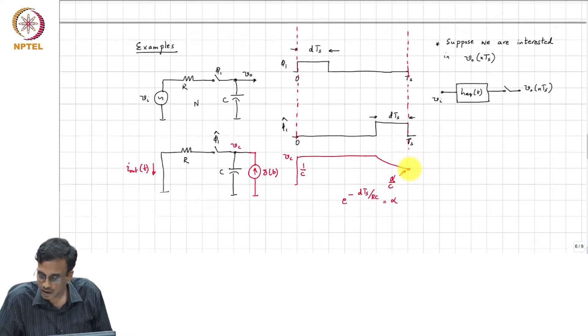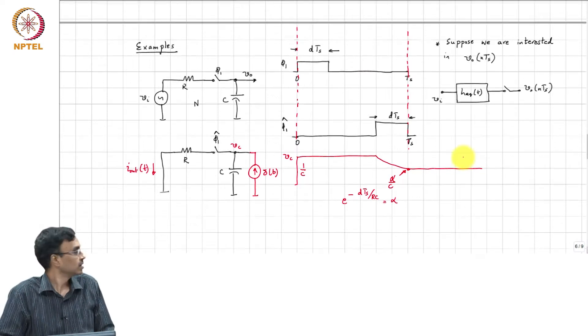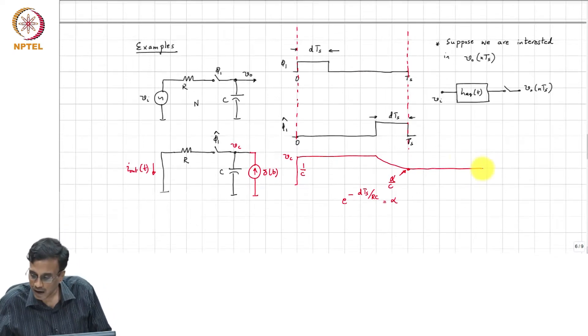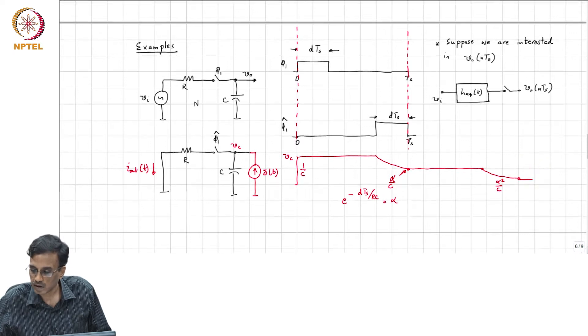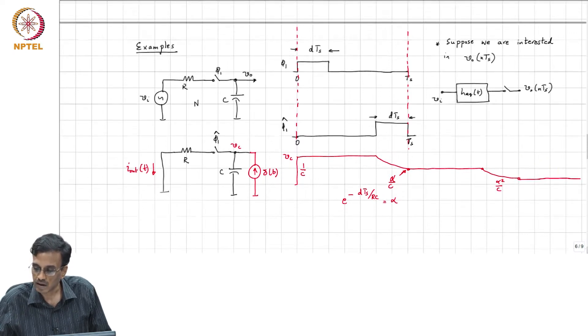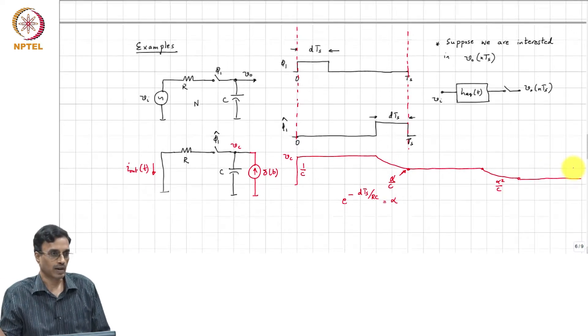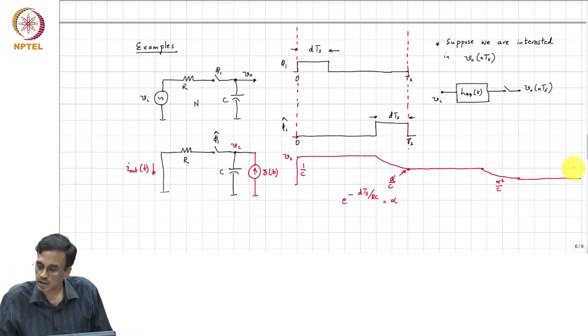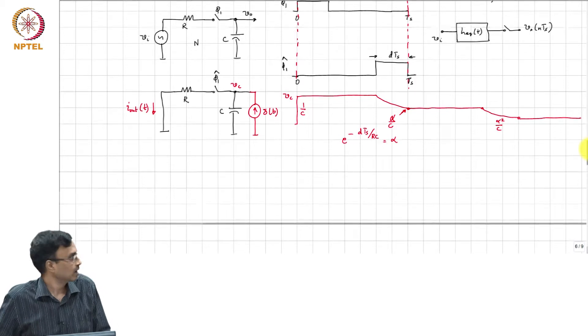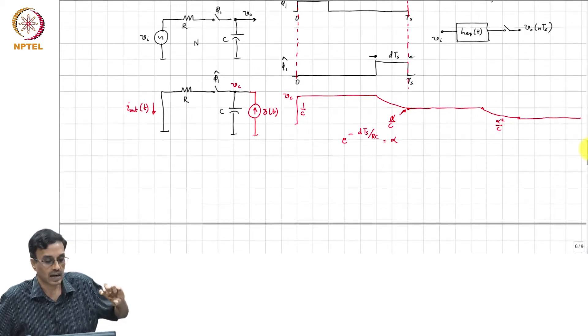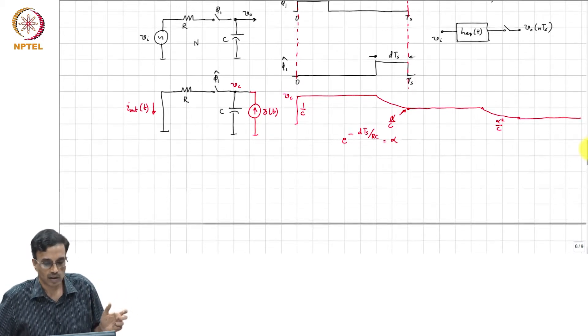Then, what will happen? It will remain the same till the next period and it will decay. Alpha square by C, decays remains the same, becomes alpha square, alpha cube by C and so on. So, but that is not exactly the output waveform we are after. We are interested in the current through the resistor.